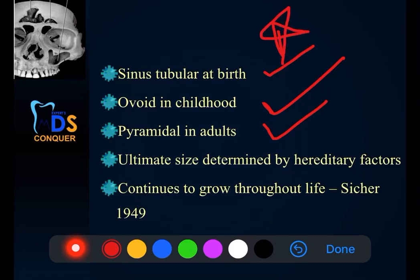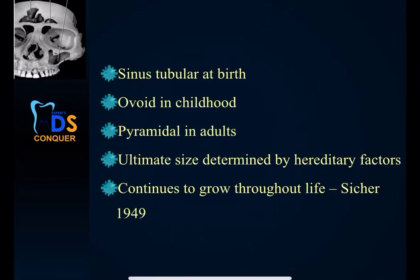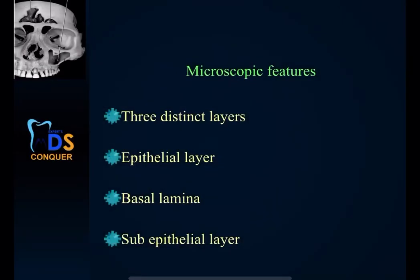The size ultimately depends upon regulatory factors and it continues to grow throughout life. For the development section, you must write the sequence, the size at birth, and also the shape at birth, childhood, and in adults — all these you need to mention.